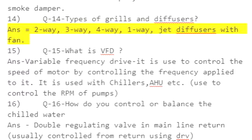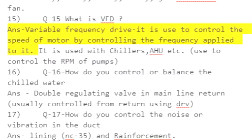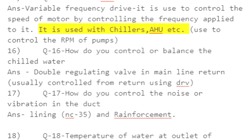Q14: Types of grills and diffusers — answer: two-way, three-way, four-way, one-way, jet diffusers with fan. Q15: What is VFD? Answer: Variable Frequency Drive. It is used to control the speed of a motor by controlling the frequency applied to it. It is used with chillers, AHUs, etc., to control the RPM of pumps.